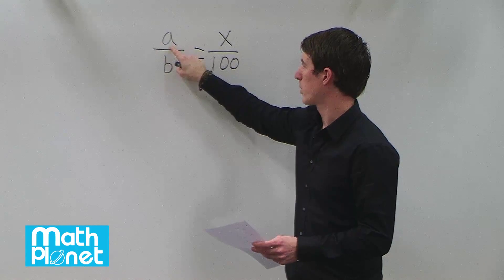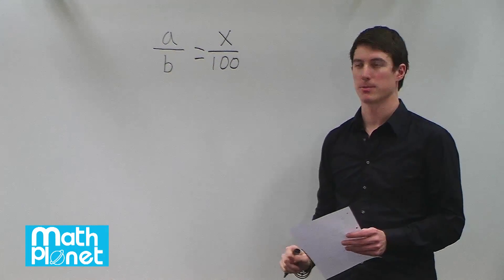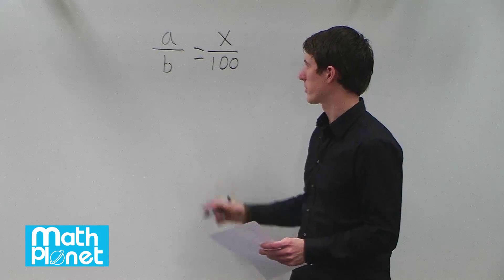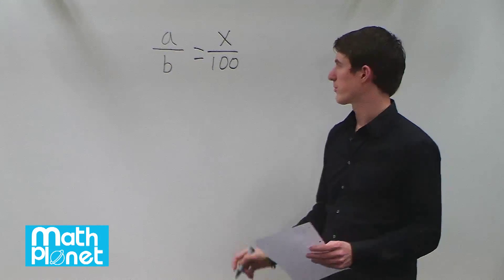So we can just plug in what we have, 54 and 25% here, and solve for B, and that will give us our answer. So this is a pretty quick way to remember it using this formula.